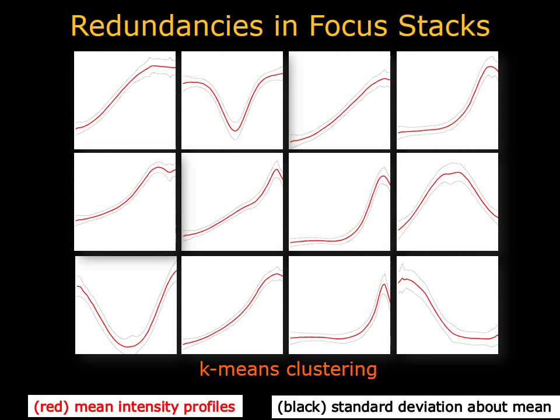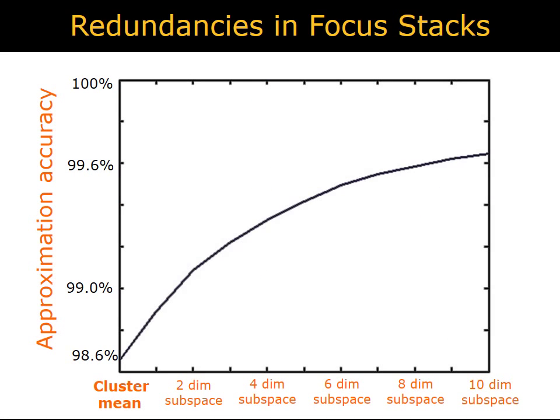We perform k-means clustering with 50 clusters on the normalized intensity profiles for many such pixels. What results are indeed very tight clusters, confirming the structure present. Representing the intensity profiles as low-dimensional projections around these cluster centers results in very good approximations.